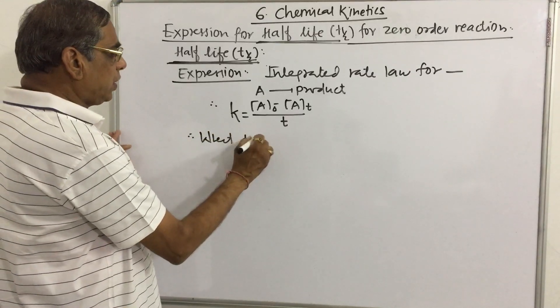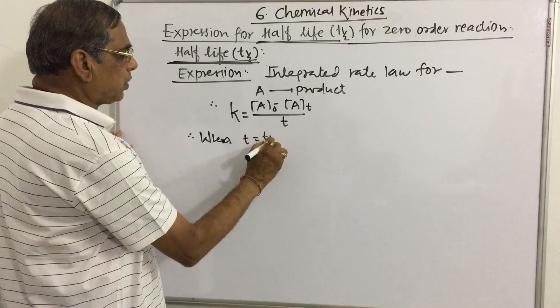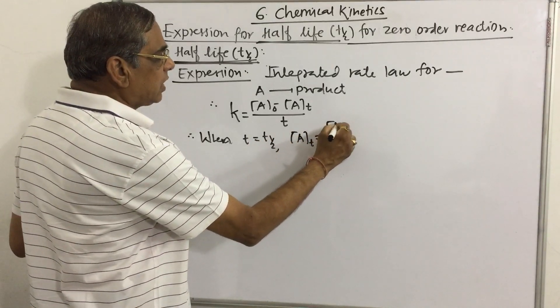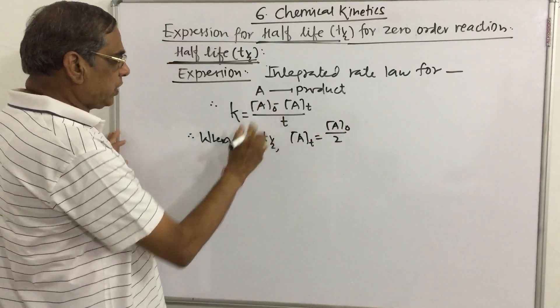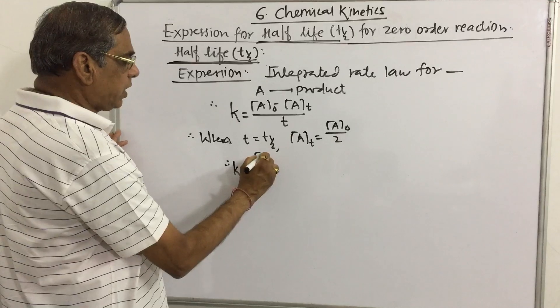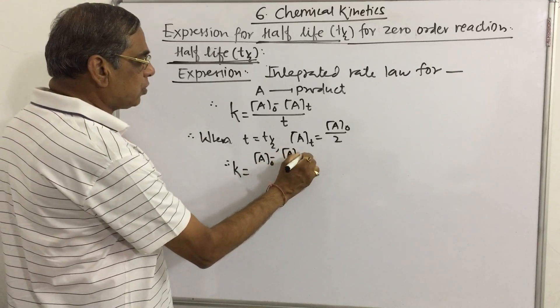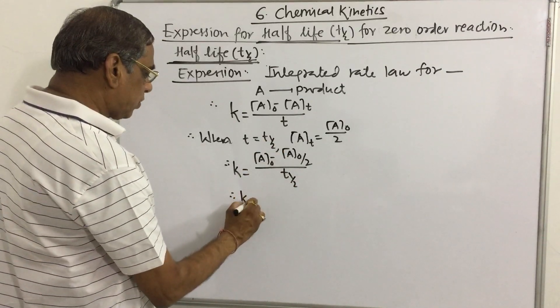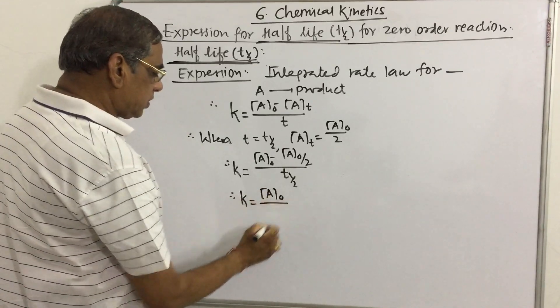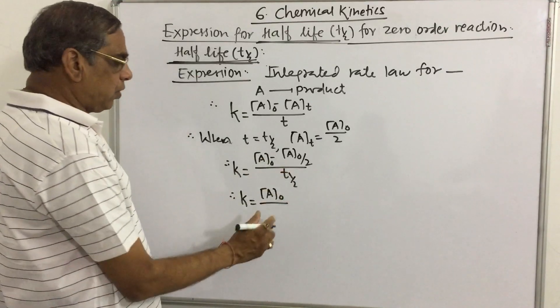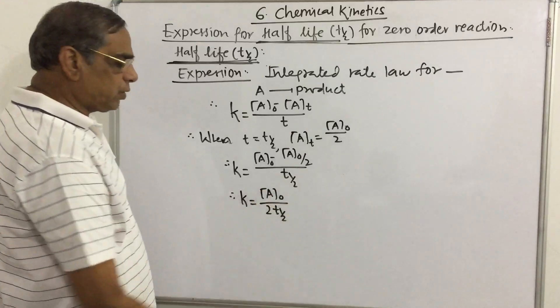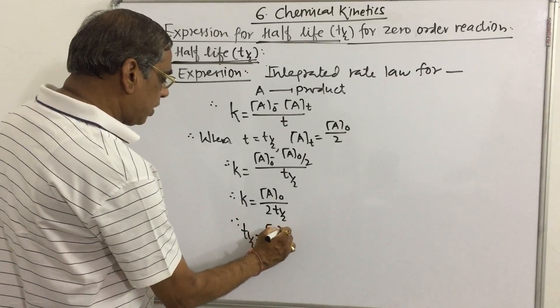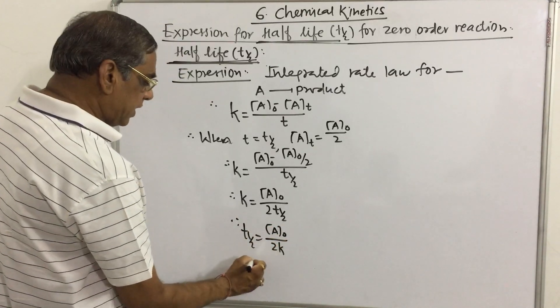when t = t_half, then what will be the amount left? Aₜ will be A₀/2. So, putting this value here: k = (A₀ - A₀/2)/t_half. Solving this, k = A₀/(2 × t_half). That is, we can write t_half = A₀/(2k). And finally,